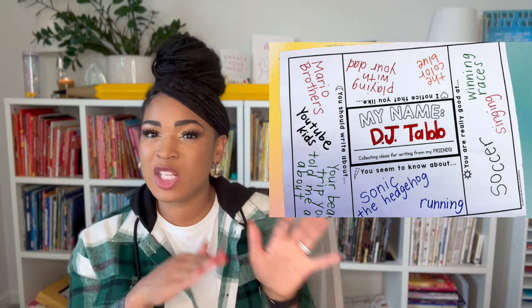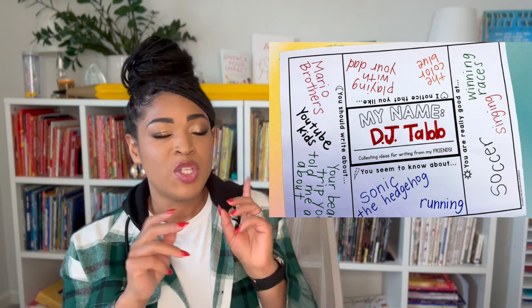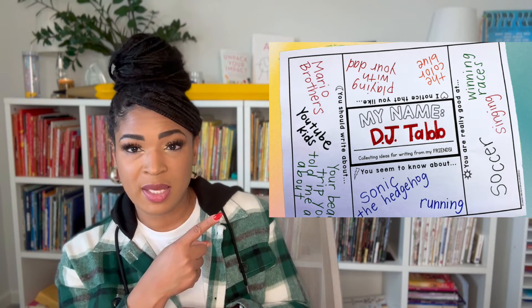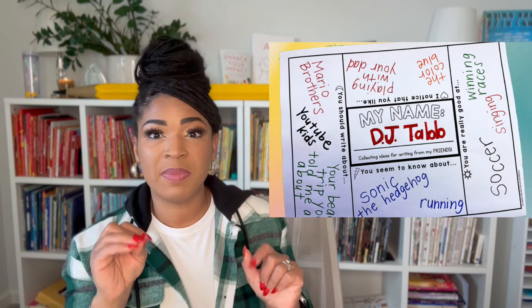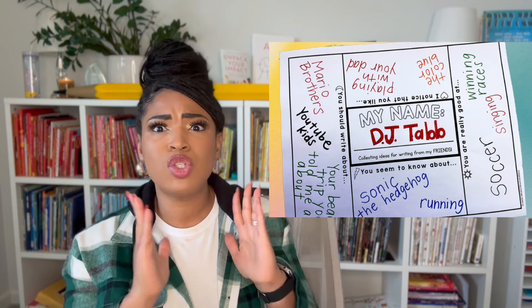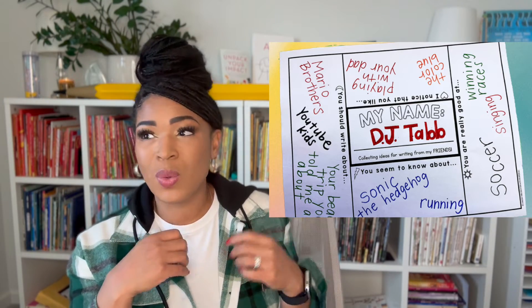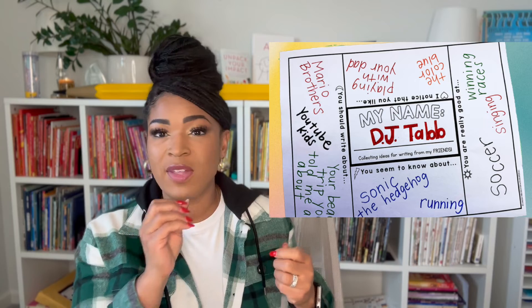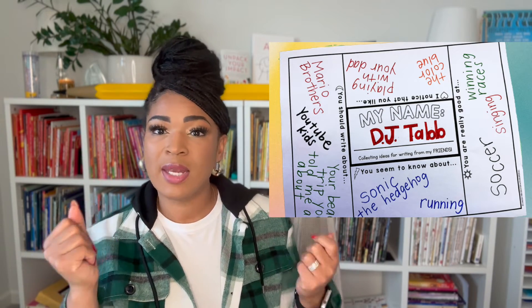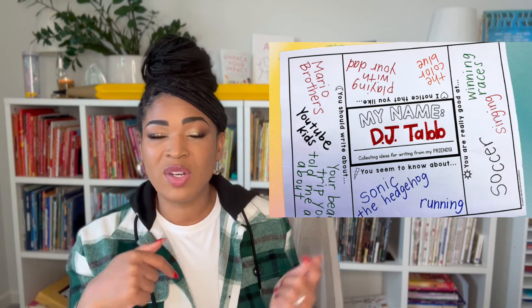The final activity is a peer idea-sharing activity. Each student gets a paper with their name in the center and different prompts going around it — things like 'you are really good at,' 'you know so much about,' 'I noticed that you like,' or 'something you should write about.' Once your kids know each other well enough, they write their name in the middle, then stand up, put on some music, walk around, and stop at different desks.